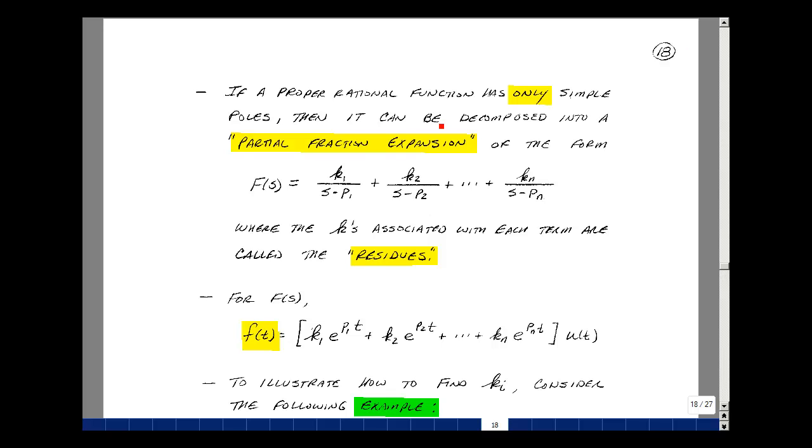If a proper rational function has only simple poles, then it can be decomposed into a partial fraction expansion. F(s) can be written as k1/(s-p1) + k2/(s-p2) + ... + kn/(s-pn), where the k's associated with each term are called residues. Using our Laplace table on page 13, we can go from the s domain to the time domain. This corresponds to k1*e^(p1*t), k2*e^(p2*t), through kn*e^(pn*t). We take the opposite sign and use it as the exponent of e, all multiplied by u(t).